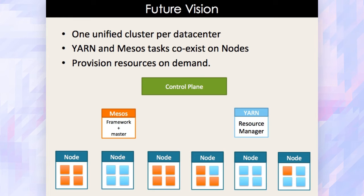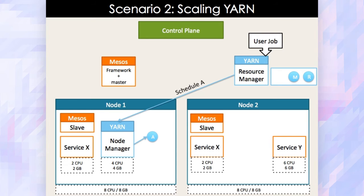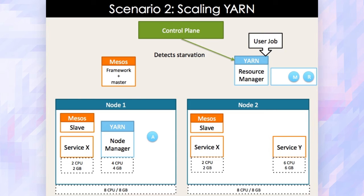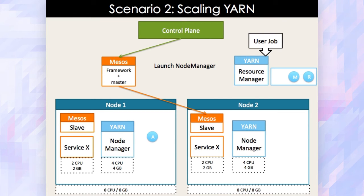With that, I'll hand it over to Renan, who is going to talk about a different use case. We've moved away from having separate clusters and now have a unified data center — an architecture where you can run anything anywhere. Both nodes are at full capacity. So what happens if we submit a job and the Yarn framework only has enough resources to launch an App Master? The App Master gets launched, but Yarn is starved for resources — it needs more resources to finish its MapReduce job. The control plane detects starvation and talks to Mesos to preempt service Y, which is of lower priority. We horizontally scale by launching another node manager and giving the resources to Yarn to finish its MapReduce task.